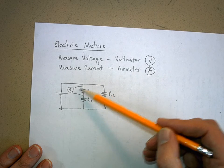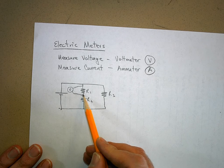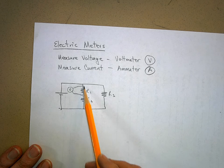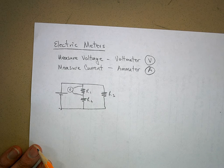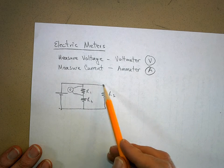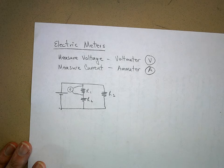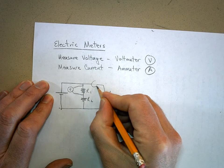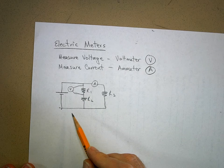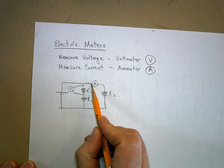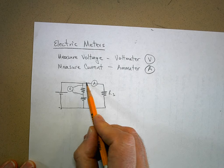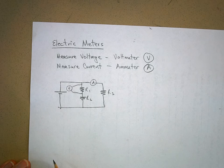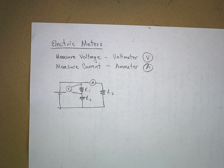If you hook the black lead up on one side and the red lead on the other, it would actually read a negative voltage because the voltage drops. Notice that the voltmeter is in parallel with R1. If you want to know the current running through R3, you insert the ammeter directly into the circuit so that all the current goes through it. Voltmeters are placed in parallel; ammeters are placed in series within the circuit.